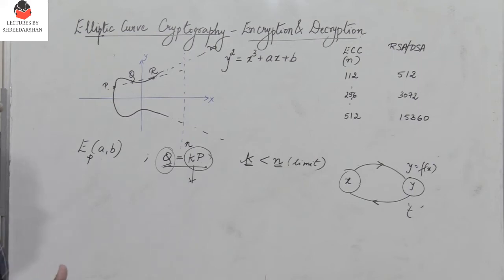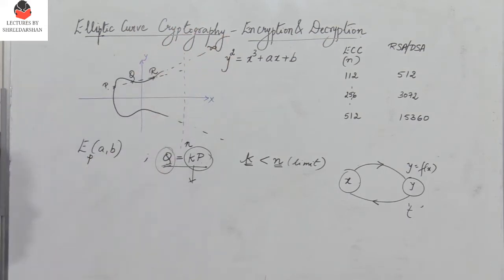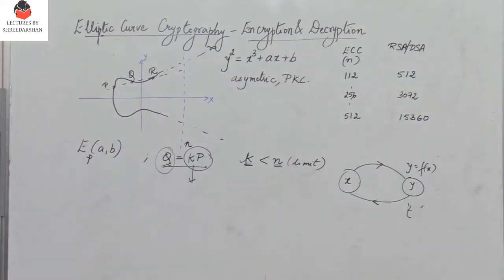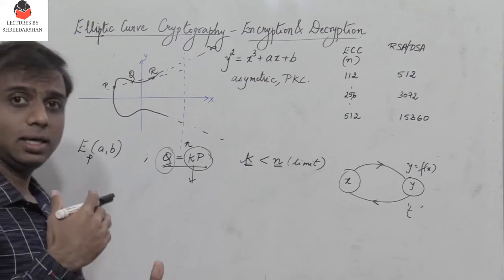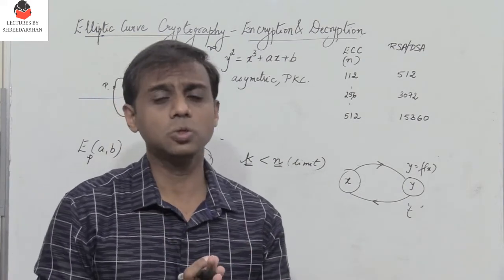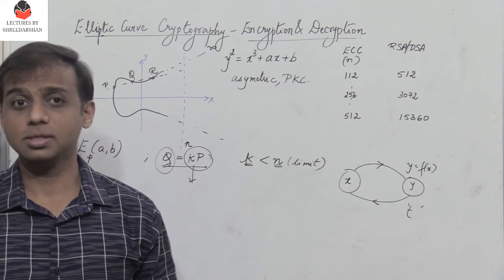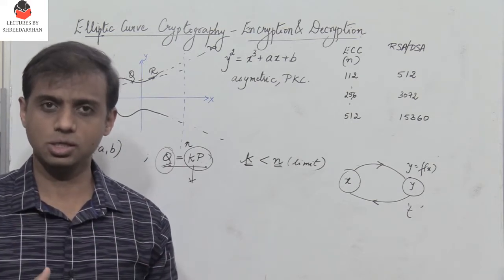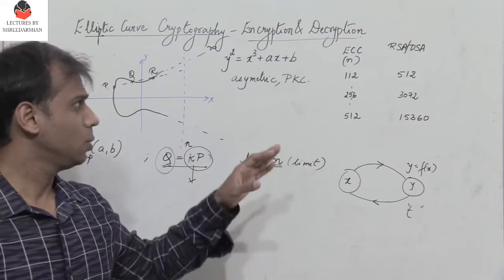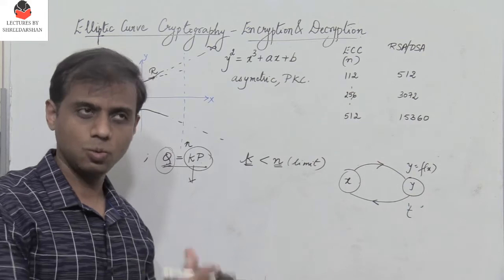When we talk about the process of encryption and decryption, elliptic curve cryptography is asymmetric or a public key cryptosystem. We have user A key generation and user B key generation, and then we define the encryption and decryption algorithms — very similar to Diffie-Hellman key exchange, where we define global variables and then the key generation and encryption/decryption steps.